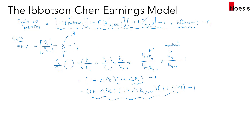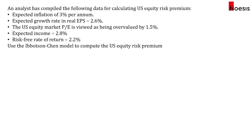Hopefully you can see the linkage between the equity risk premium using the Ibbotson-Chen model and the Gordon Growth Model. Now let's look at an example where an analyst has compiled the following data for calculating the US equity risk premium: expected inflation is 3% per annum, expected growth rate in real EPS is 2.6%, the US equity market PE ratio is viewed as being overvalued by 1.5%, the expected income is 2.8%, and the risk-free rate of return is 2.2%. We'll use the Ibbotson-Chen model to compute the US equity risk premium.